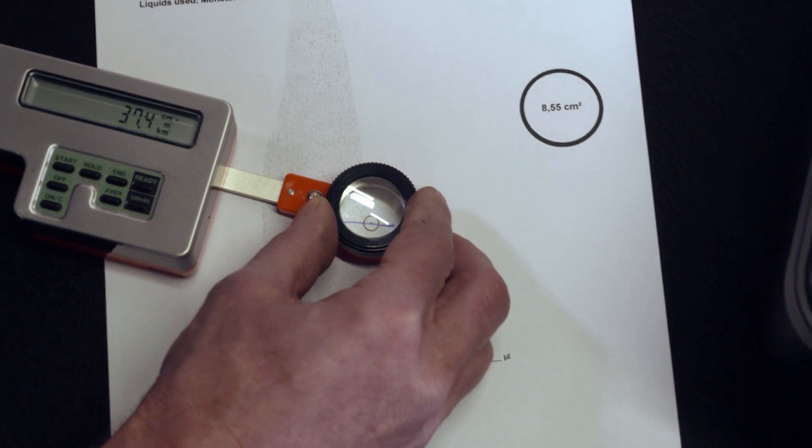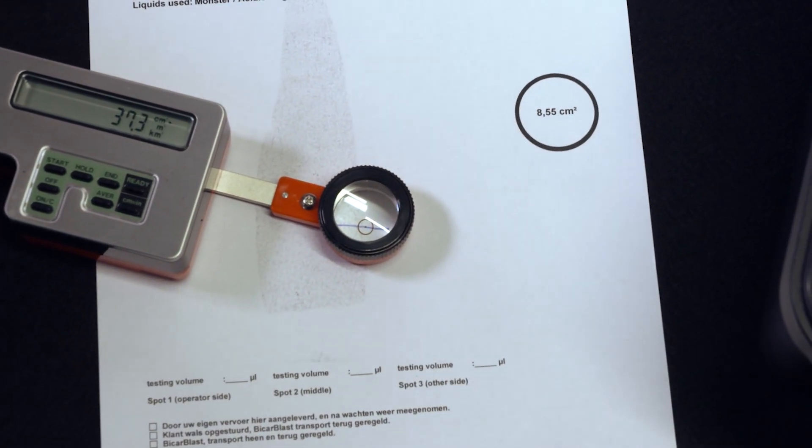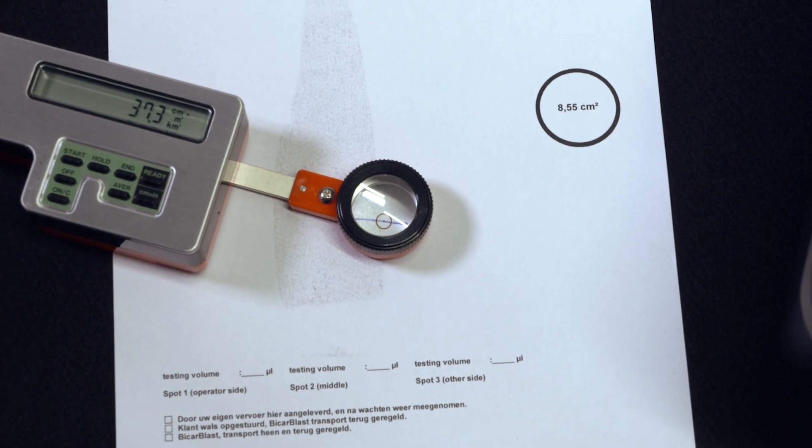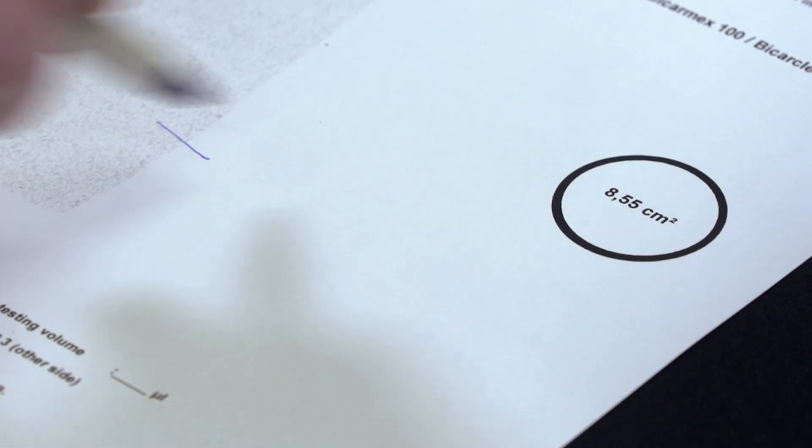After measuring the blot of ink, the planimeter tells us that the ink is distributed on an area of 37.3 square centimeters.